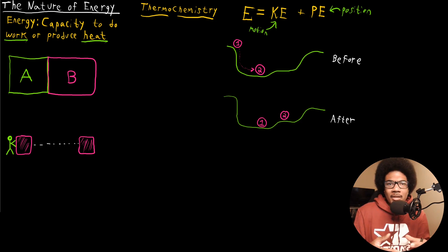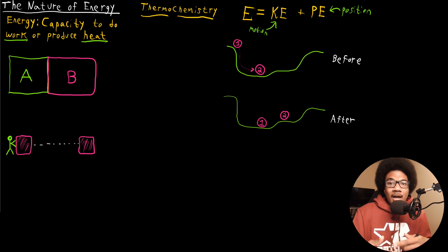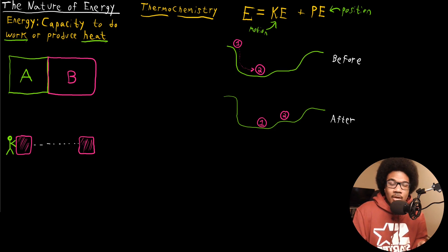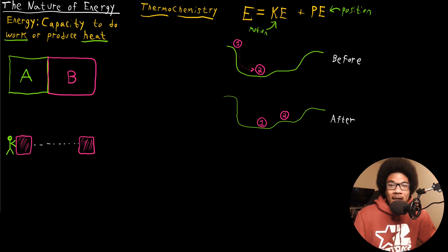Even on a subatomic level, when we talk about atoms and their structure, an electron moves around a nucleus. It has kinetic energy associated with that motion around the nuclei, but its potential energy comes from its position relative to the nucleus. So there's always this balance between kinetic and potential energy in every single physical scenario.